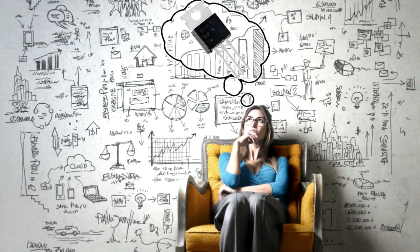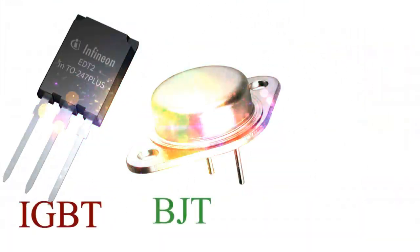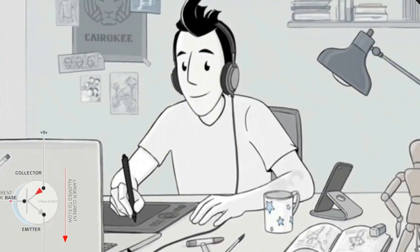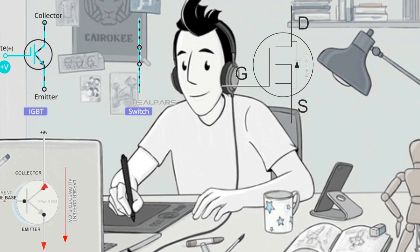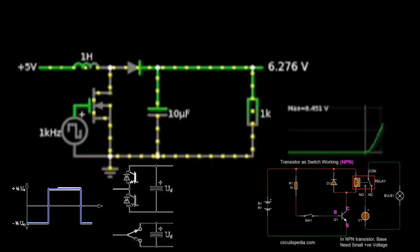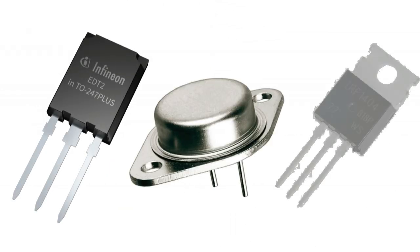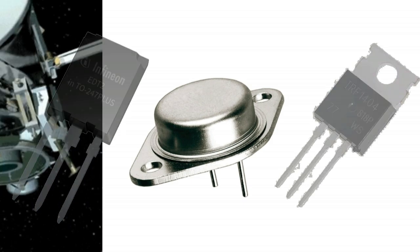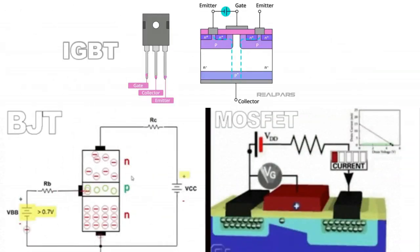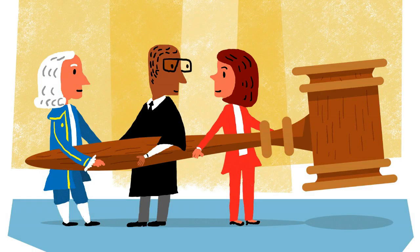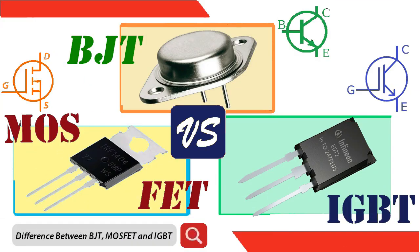If you have always wondered which power transistor you should use for your circuits, in this video we will see all the main differences between the IGBT, the BJT, and the MOSFET. As a designer, you will have to determine whether to use BJTs or MOSFETs in your application power stage, or whether IGBTs would be better. In this comprehensive exploration, we will examine the key distinctions between BJT, MOSFET, and IGBT, enabling you to make well-informed decisions that align with the specific requirements of your project.